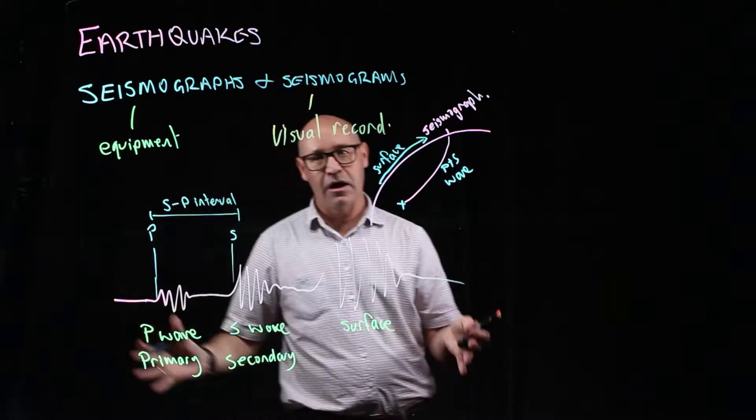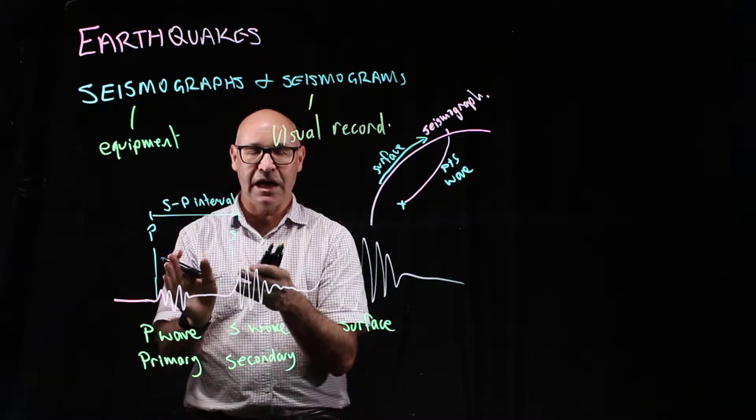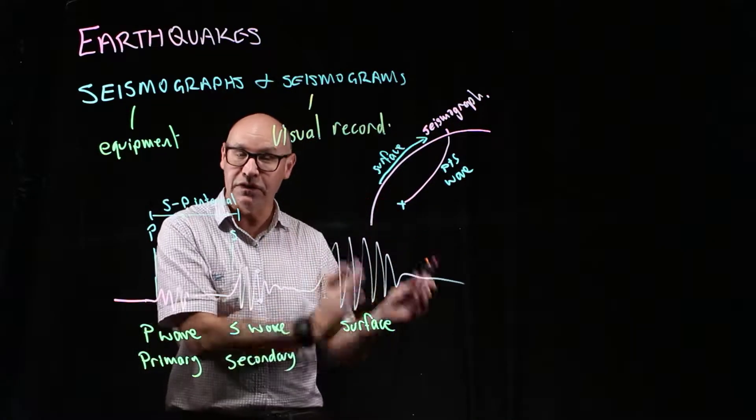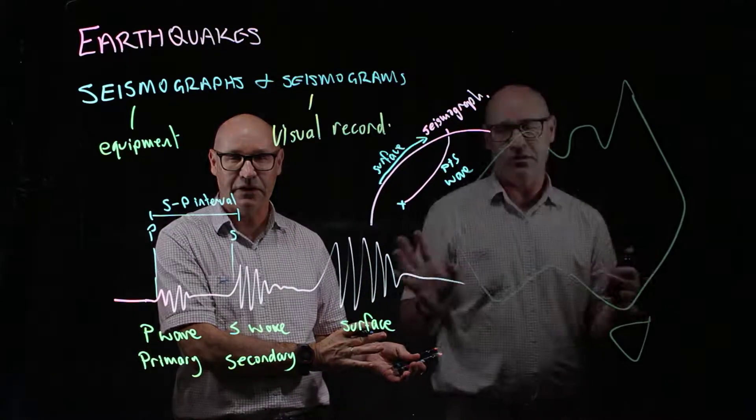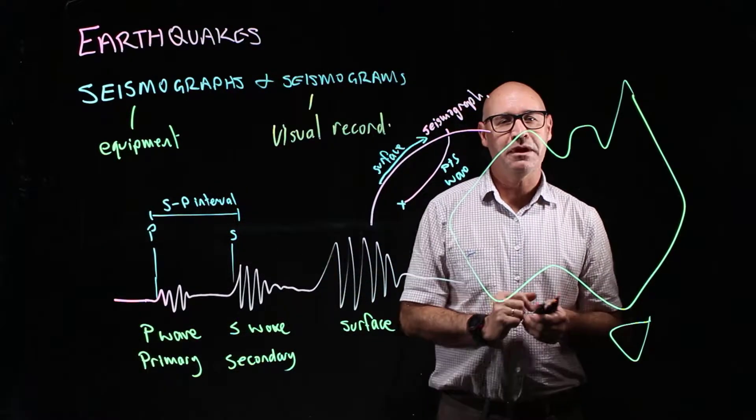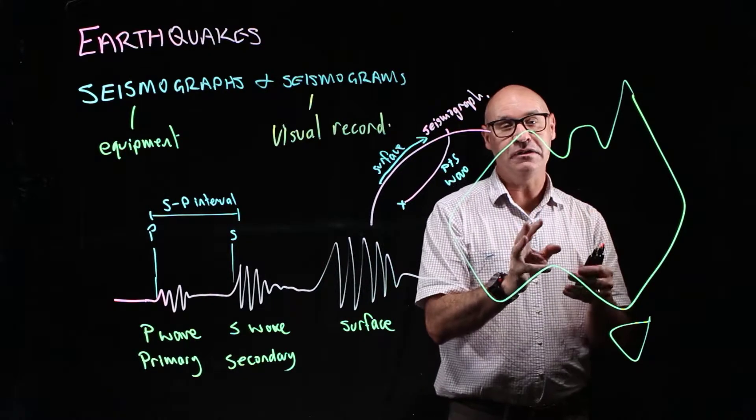So that's a time in seconds or minutes. And they are able to convert that time to a distance. And that's the distance to the epicenter. So the information from the S-P interval is able to help the seismologist identify the epicenter.